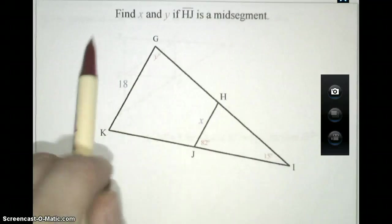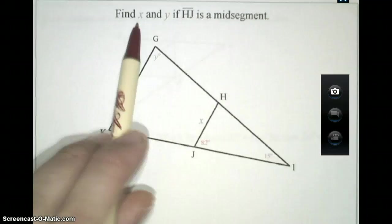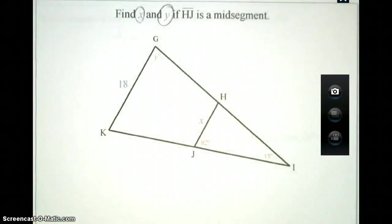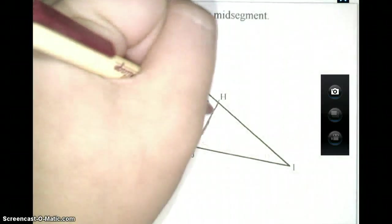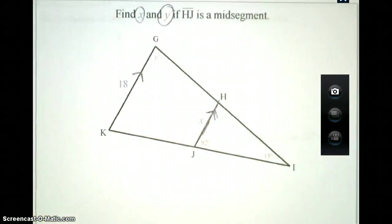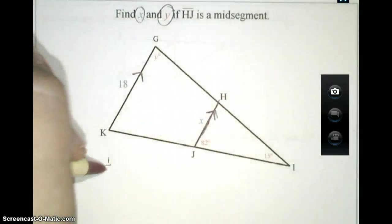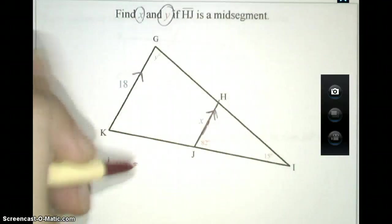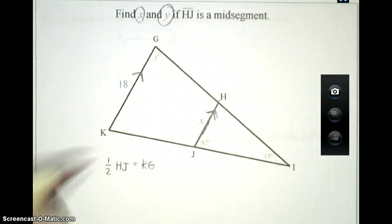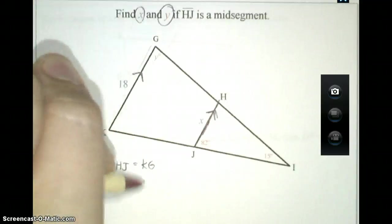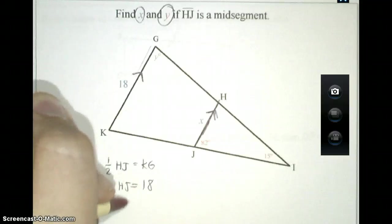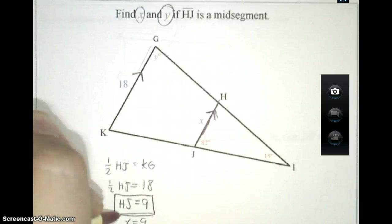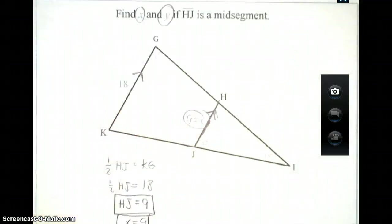This next question is going to use both facts of the midsegment theorem. In this problem, I want you to find the value of X and Y, and HJ is our midsegment here. So with that being said, we know HJ is going to be parallel to GK based on the midsegment theorem. We also know that HJ will end up being half as long as KG. Since KG's value is known here, KG is 18, therefore HJ will end up having a value of just 9. This means X is equal to 9 in this problem.